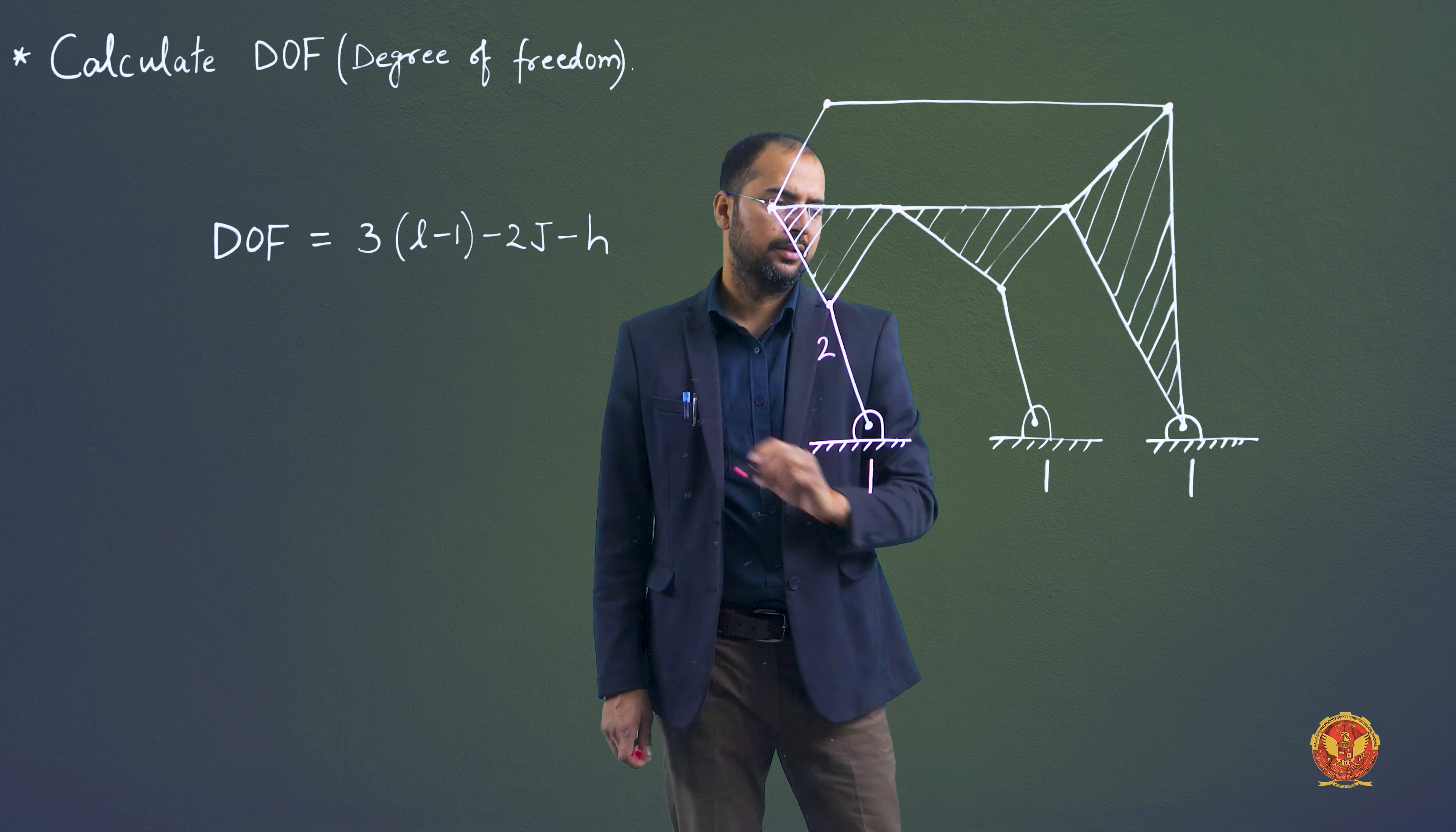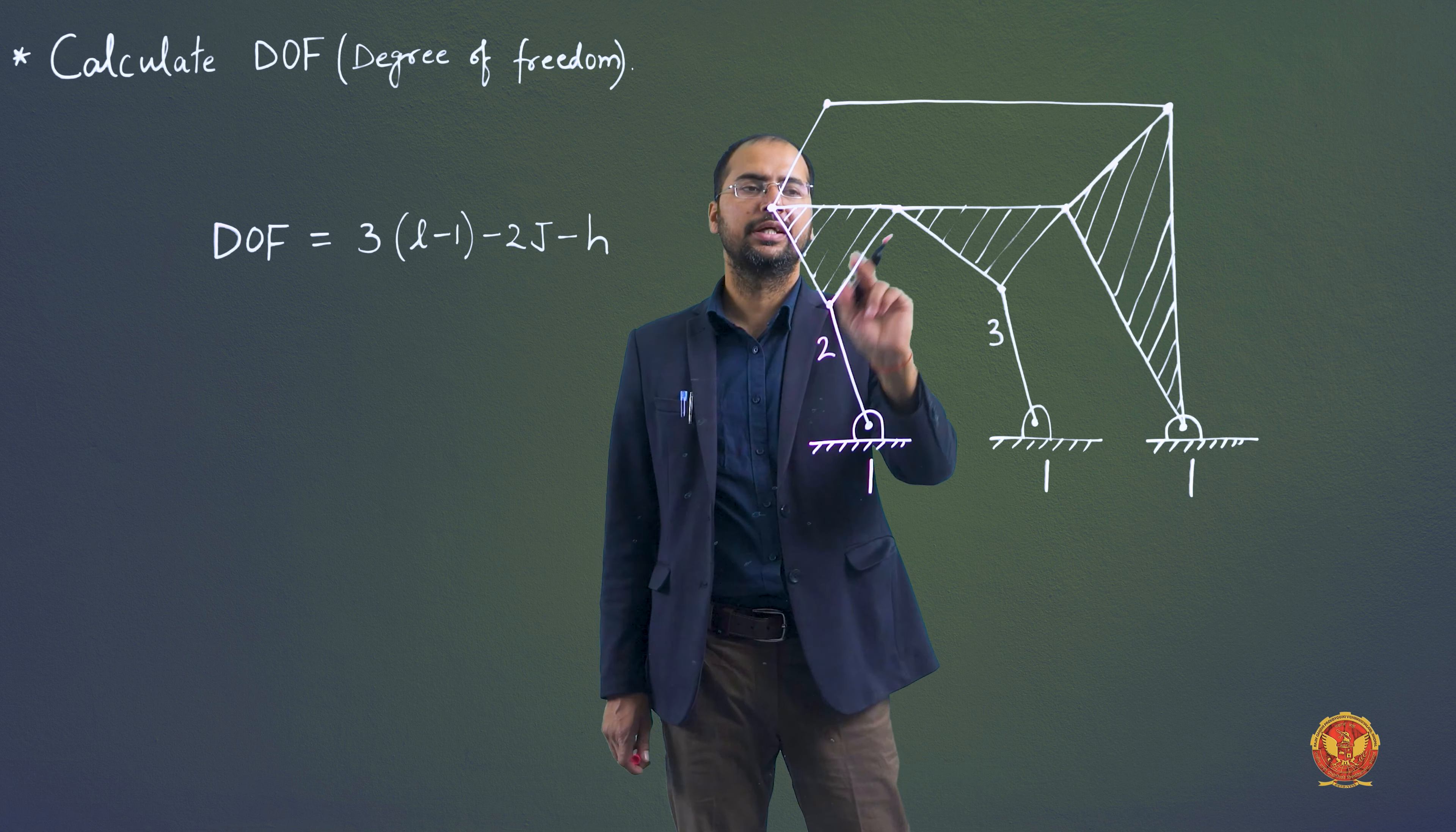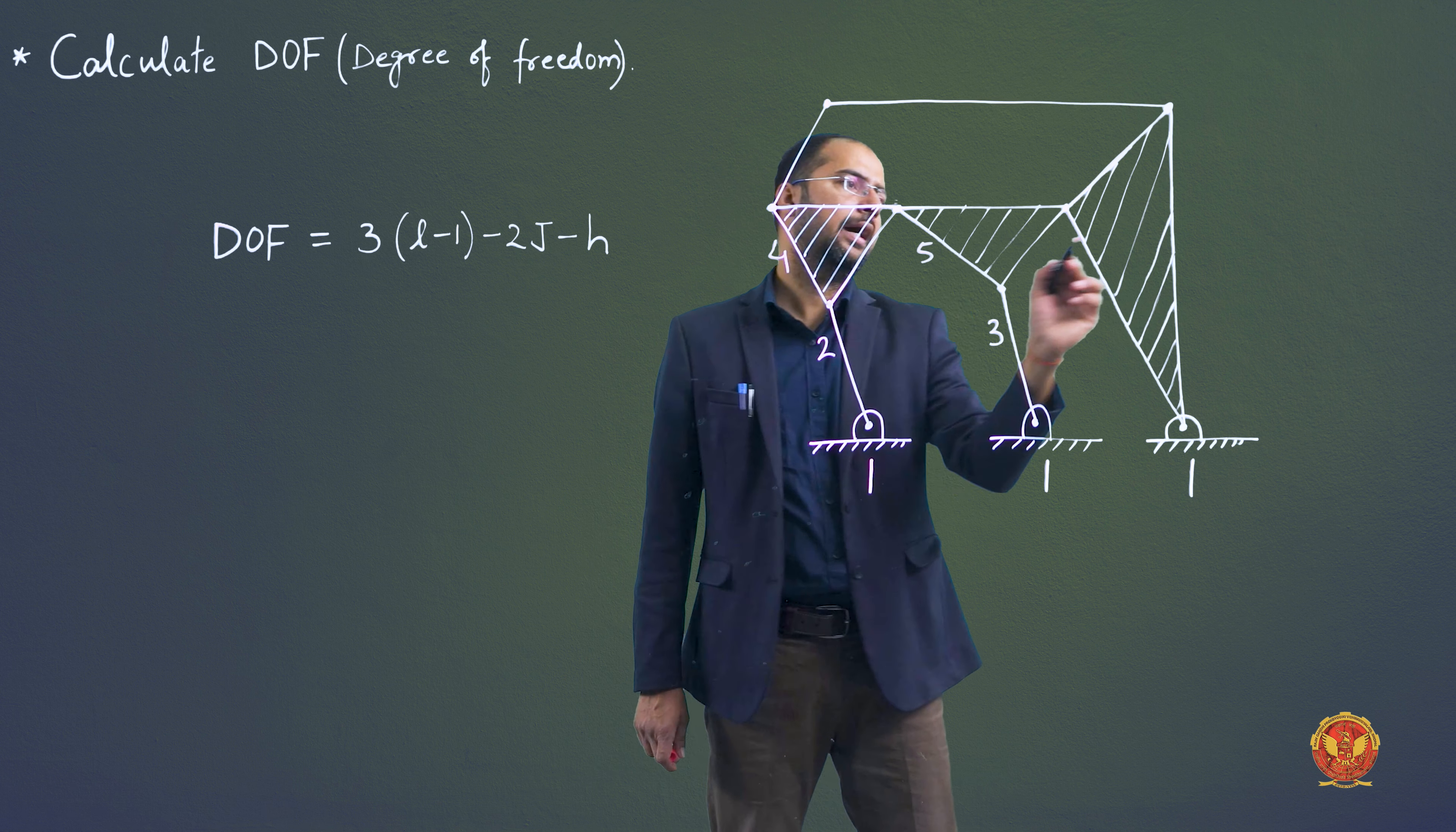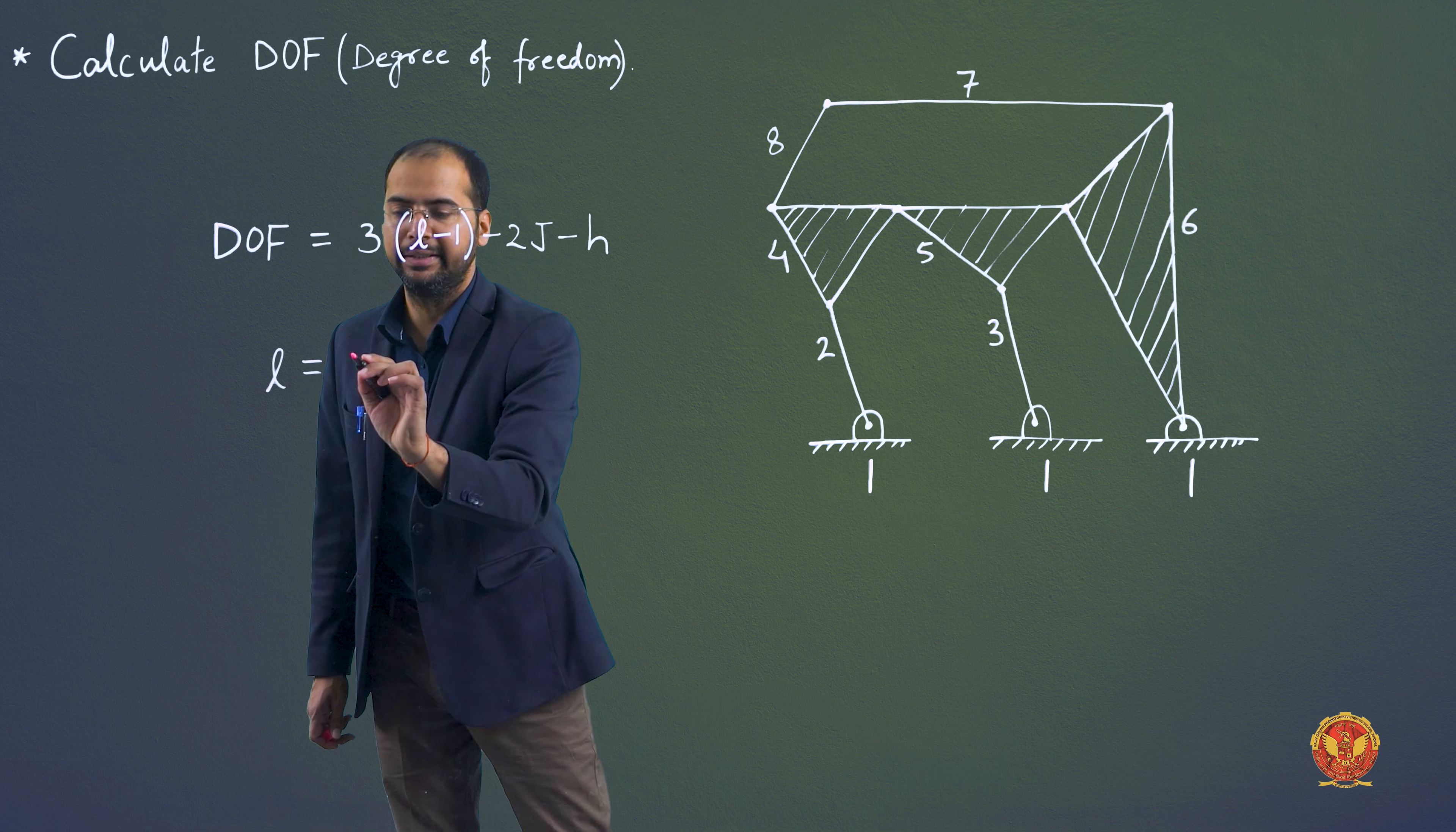This is link number 2, this is link number 3. This hatched portion is a single link, also known as a ternary link. So this is the 4th link, this is the 5th link, and this is the 6th link. This one is 7th and this one is 8. So the total number of links we have is 8.